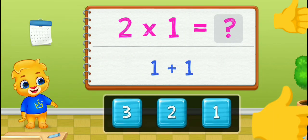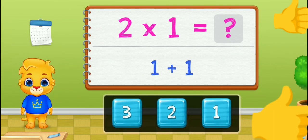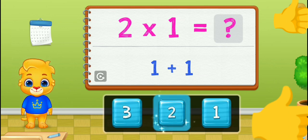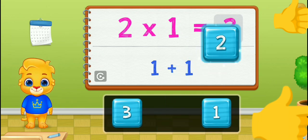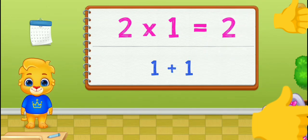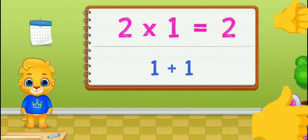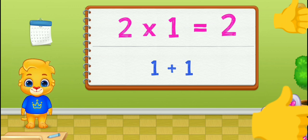If you can add numbers, you can multiply them. 2 times 1 is the same as adding 1. 2 times 2... 2 times 1 is just like 1 plus 1 equals 2.